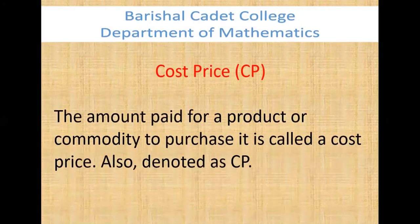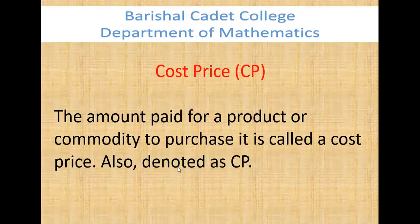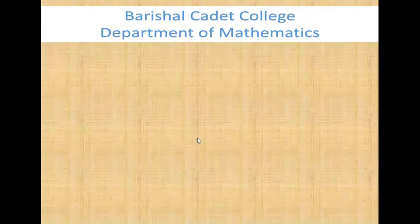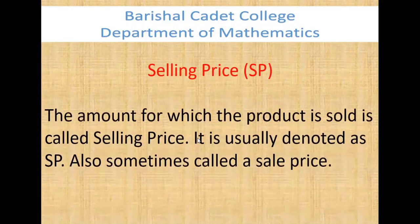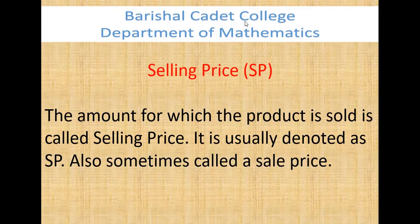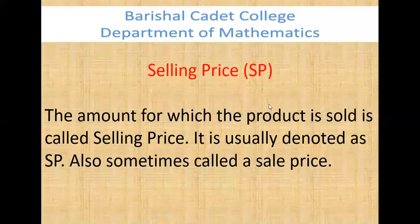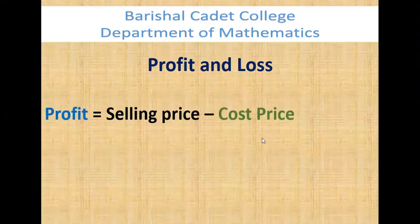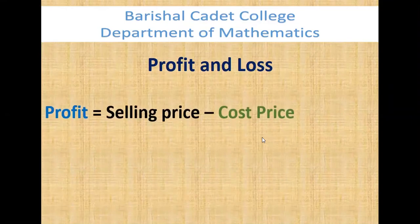The learning outcomes: at the end of my class you will be able to explain profit and loss, solve problems related to profit and loss, and solve real-life problems. The key points are: cost price, selling price, profit, and loss. First of all, what is cost price? The amount paid for a product or commodity to purchase it is called the cost price, also denoted as CP. Then, selling price: the amount for which the product is sold is called the selling price, also sometimes called the sale price.